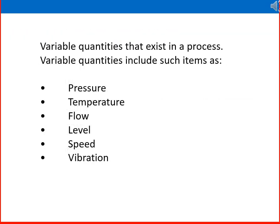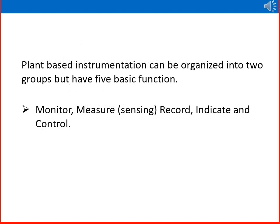Variable quantities that exist in a process include pressure, temperature, flow, level, speed, and vibration. Think about examples of each variable in your personal life and workplace. Plant-based instrumentation can be organized into two groups but has five basic functions: sense, monitor, measure, record, indicate, and control.